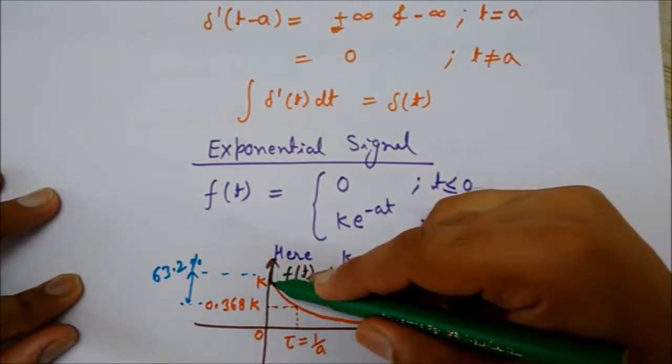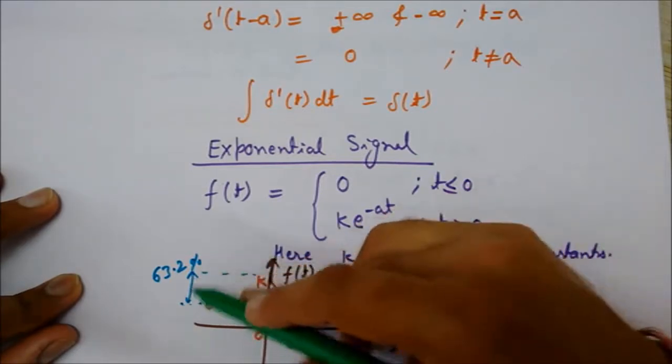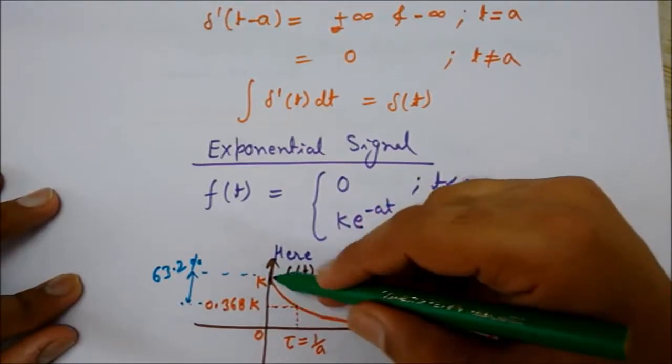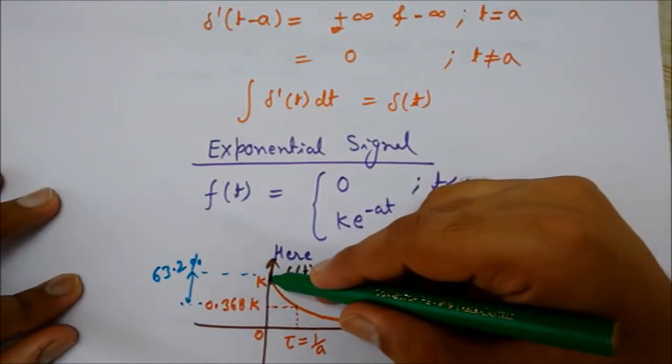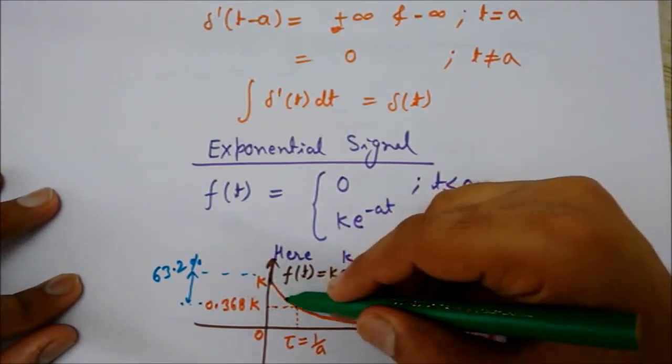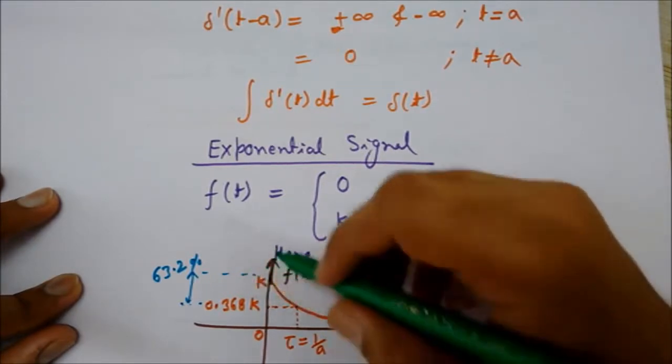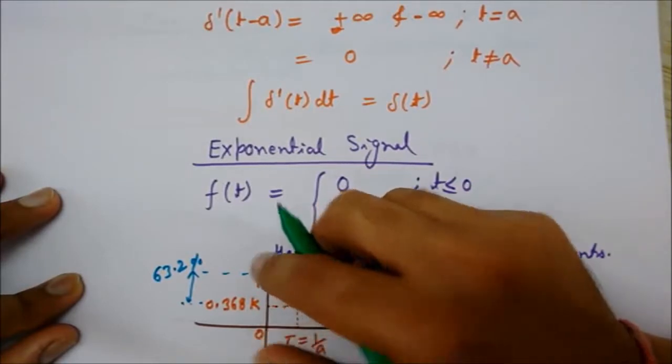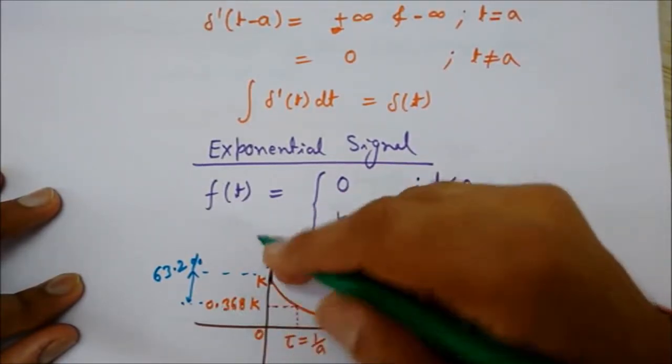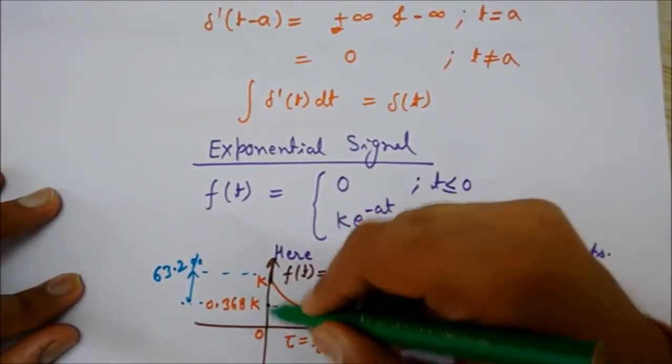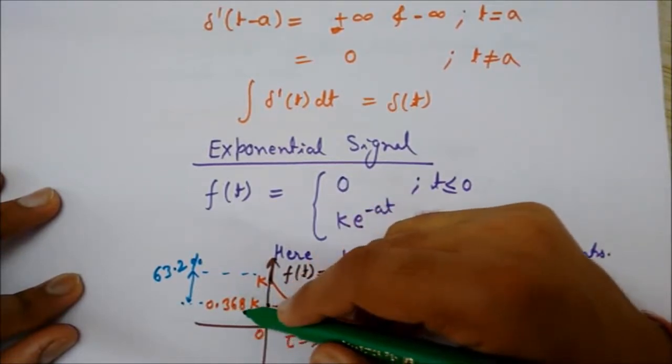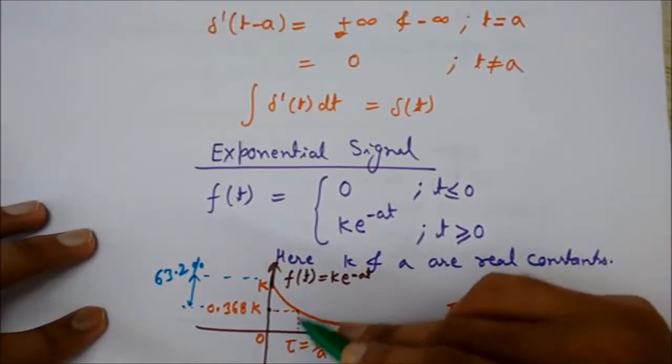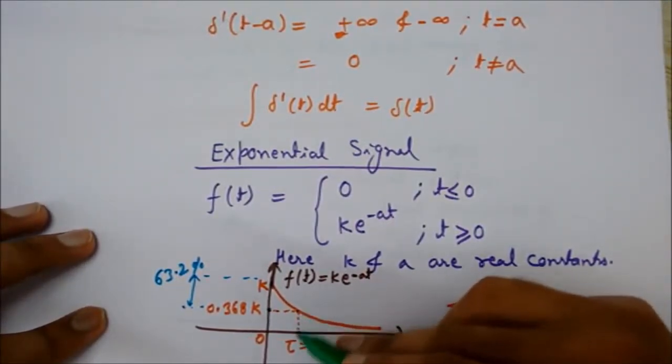has decreased by 63.2 percent of the total change from the initial value k, the remaining height is 0.368. This is the point which is called the time constant. I think it's clear.